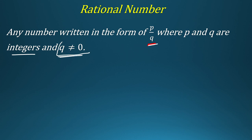The reason is very easy. If you write any number with denominator as 0, then this number cannot be defined. I made another video explaining why the denominator cannot be 0, relating it with fractional numbers.